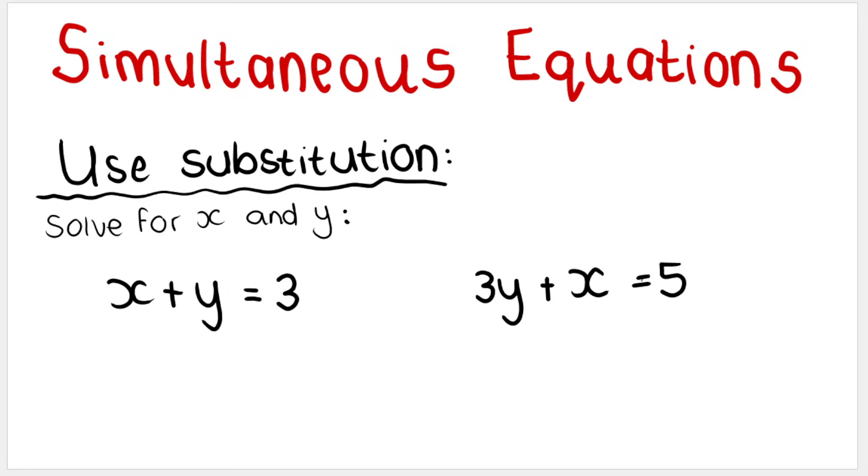What I want to illustrate with this example is that when we do substitution, when we're solving for two variables, we've got two equations. We need to isolate one of the variables in one of your equations. When I say isolate, I mean get that variable alone, get it standing alone on one side of the equation.